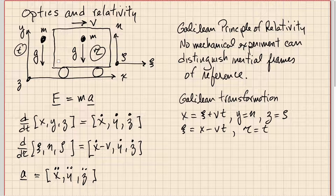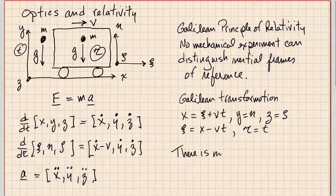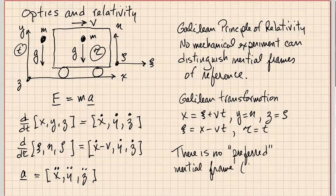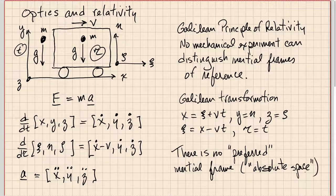If the two frames were accelerating with respect to each other, that would no longer be true. So inertial reference frames are ones in which Newton's law of motion holds, and they are characterized by the fact that they all move with respect to each other with constant velocity. From this we can conclude that there is no preferred inertial frame — no absolute space. We can use any frame as long as it's inertial.